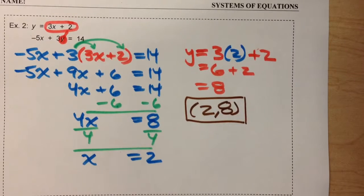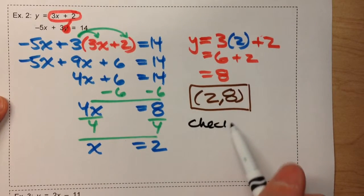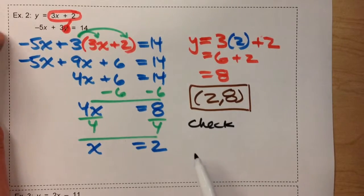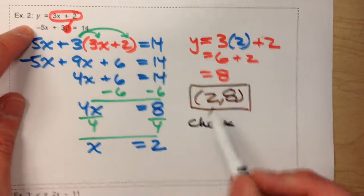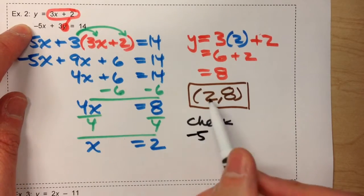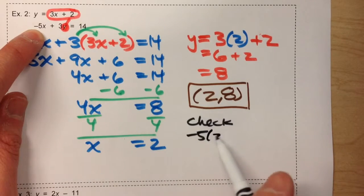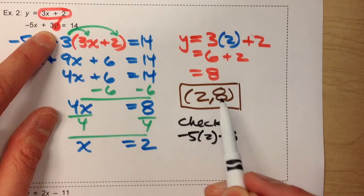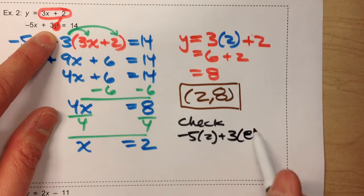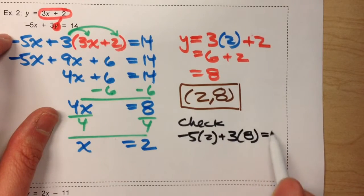And just to make sure we did the problem right, we can check our answer pretty easily. To check the answer, use the other equation. Meaning, since I used the first equation to find y, I'm going to take the second equation and plug in my value for x, which is 2, and I'm going to replace y with our y value, 8. And it should equal 14, like it says.